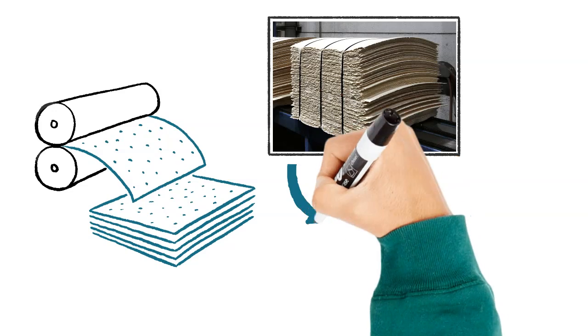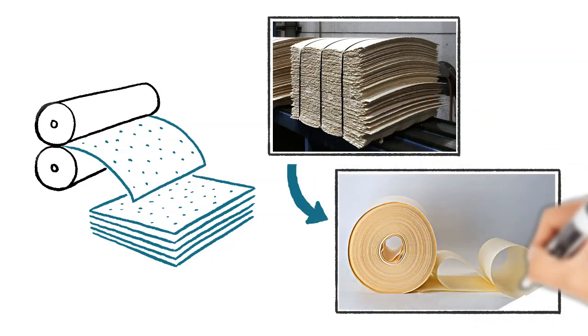Finally, the pulp is dewatered to 55% dry matter and sheeted on a press roll. You are now left with bales of raw material to make paper release liner or other paper products.